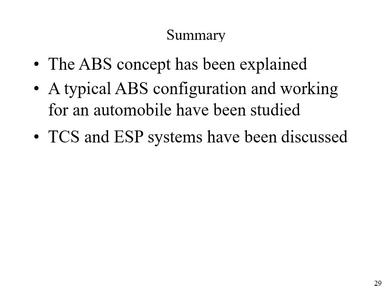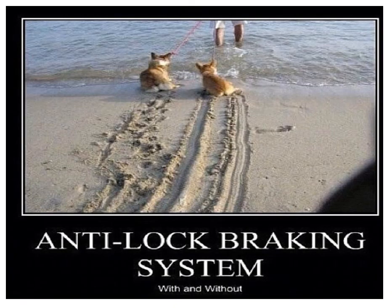In summary, we talked about the ABS concept, its typical configuration and working for an automobile, along with TCS — traction control system — and ESP — electronic stability program. I hope with this discussion we are able to understand how an ABS system works. Usually without ABS the brakes are applied continuously; with ABS they are applied independently in cyclic form. That ends the discussion about the anti-lock braking system. Thank you — we'll move to the next class.